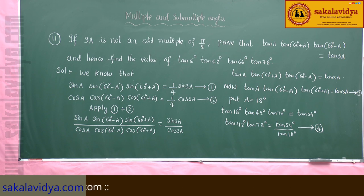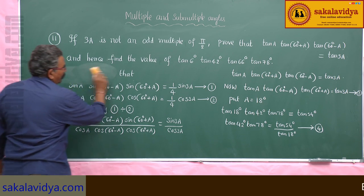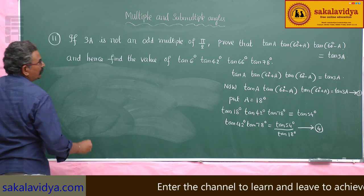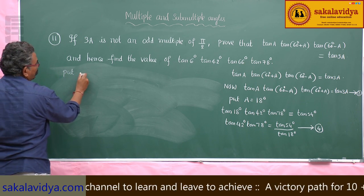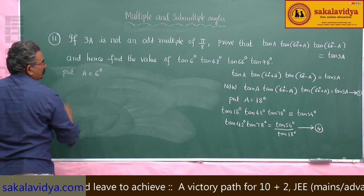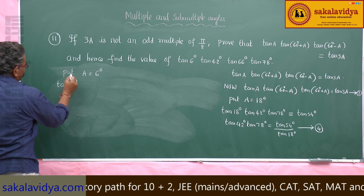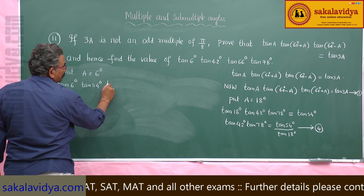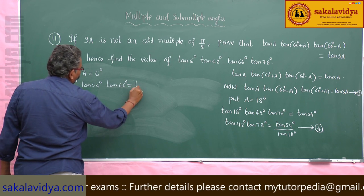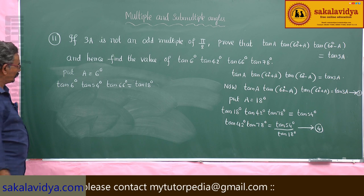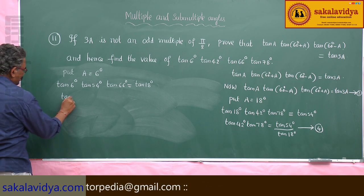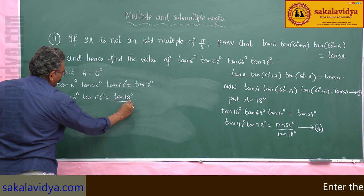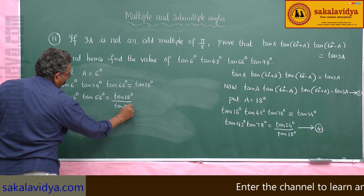Now put A = 6°. This becomes tan 6° · tan 54° · tan 66° = tan 18°. So tan 6° · tan 66° = tan 18° / tan 54° — say equation 5.